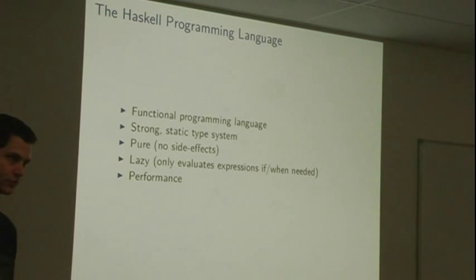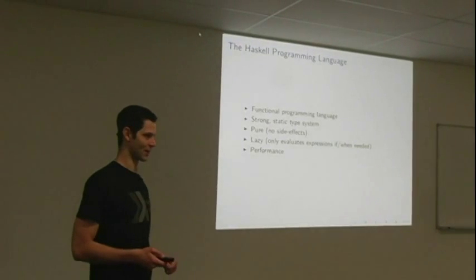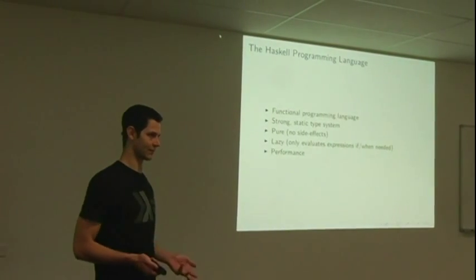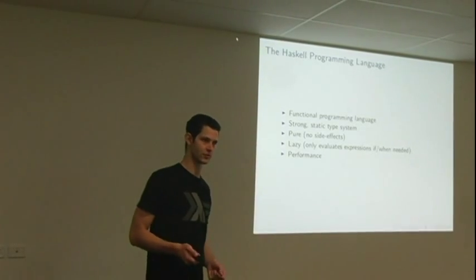Haskell is a functional programming language, which means it uses a paradigm where program execution is treated as the evaluation of mathematical functions. It has a strong static type system and a very expressive type system. It's pure, which means programs have no side effects. It's lazy, so it only evaluates expressions if or when they're needed, and it has high performance, typically within an order of magnitude of C.